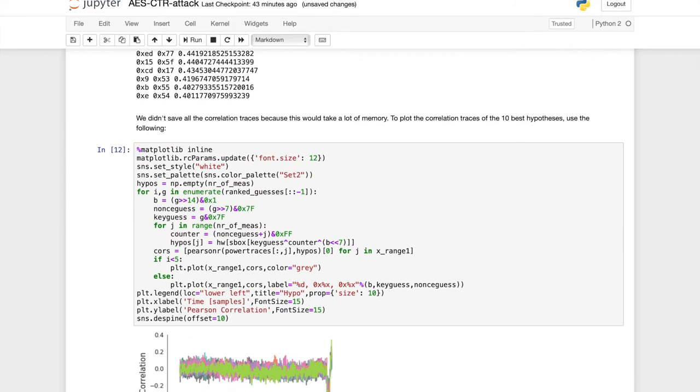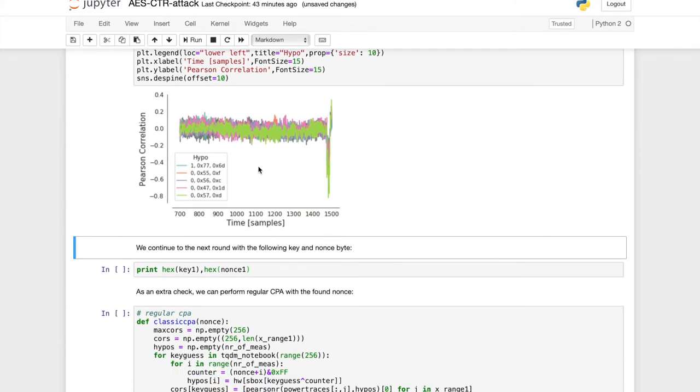We can make a plot of the 10 first ranked guesses. And then we see that the winning guess, which is the green line, has a very large correlation peak towards the end of the sub-bytes. Which makes sense, because we're attacking the last s-box. And so the winning guess has bit b equal to 0, which means that the most significant bit of the key byte and the nonce byte are the same. And then the lower 7 bits are given here.